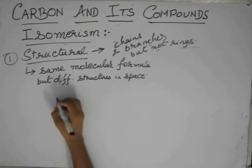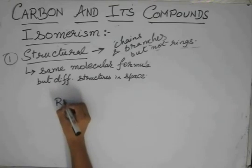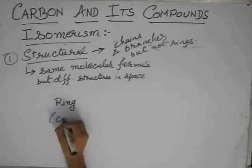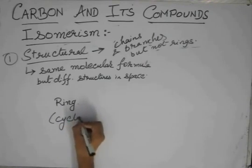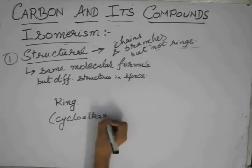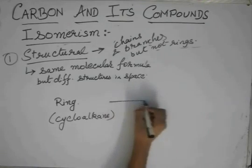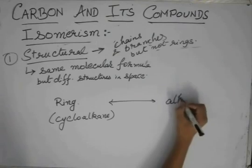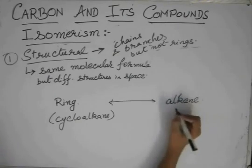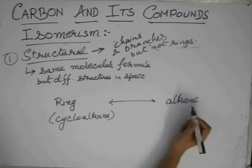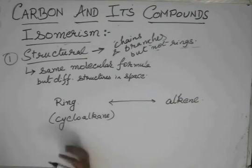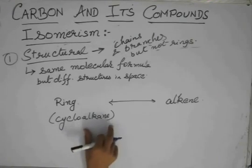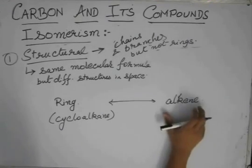We have seen that a ring, a cycloalkane, is an isomer of an alkene of the same number of carbon atoms, because you don't reduce the number of carbon atoms or increase them. So cyclohexane will always be an isomer of hexene.